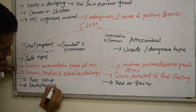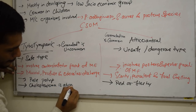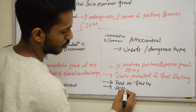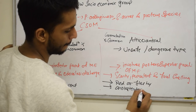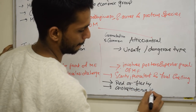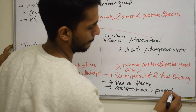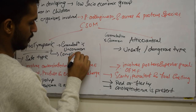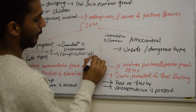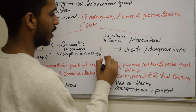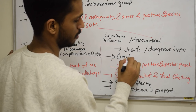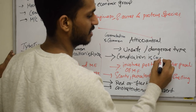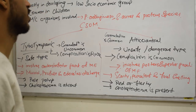Cholesteatoma is absent in tubotympanic type, whereas in atticoantral type cholesteatoma is present. Complications are rare in tubotympanic type, but in atticoantral type complications are common. The main reason for complications is cholesteatoma, as it invades the surrounding tissues.